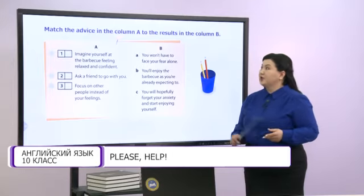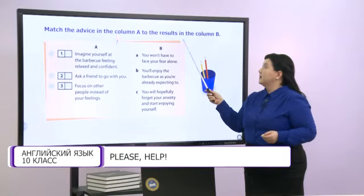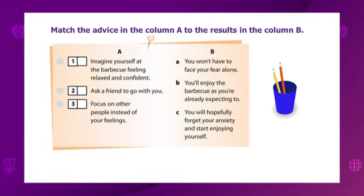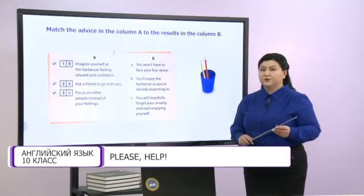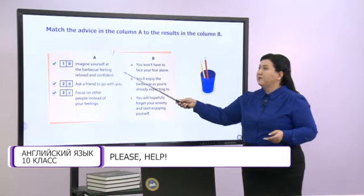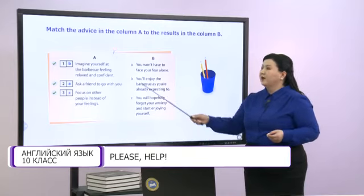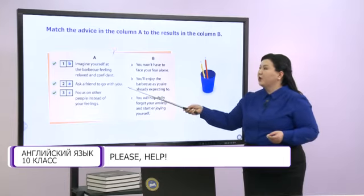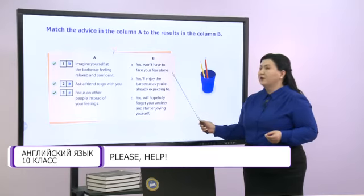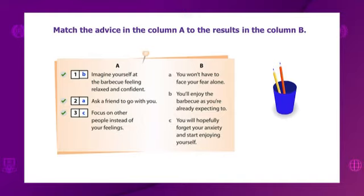Now our task is to match the advice in column A to the results in column B. Number one is B: imagine yourself at the barbecue feeling relaxed and confident — you will enjoy the barbecue as you are already expecting to. Number two is A: ask a friend to go with you — you won't have to face your fear alone. Number three is C: focus on other people instead of your feelings — you will hopefully forget your anxiety and start enjoying yourself.